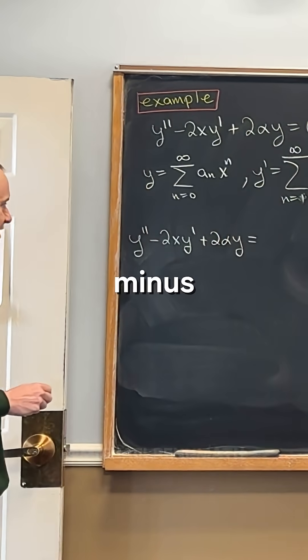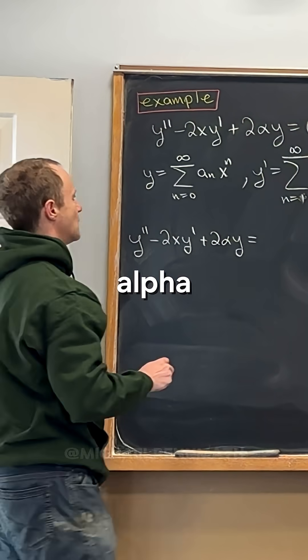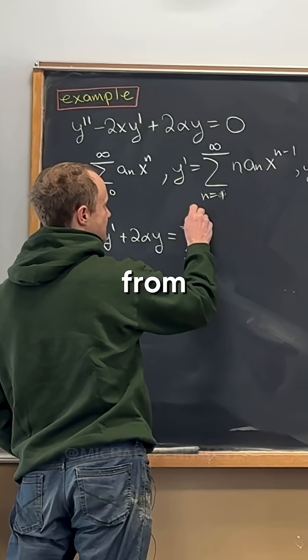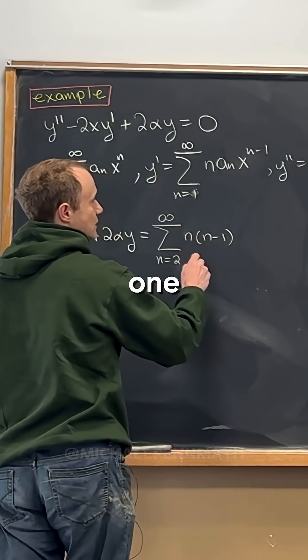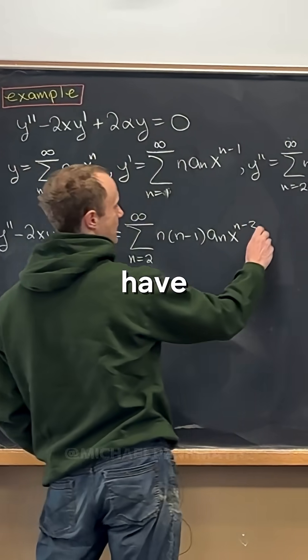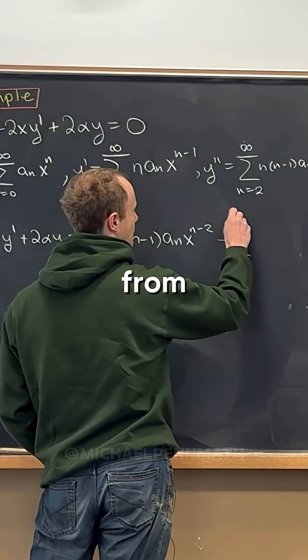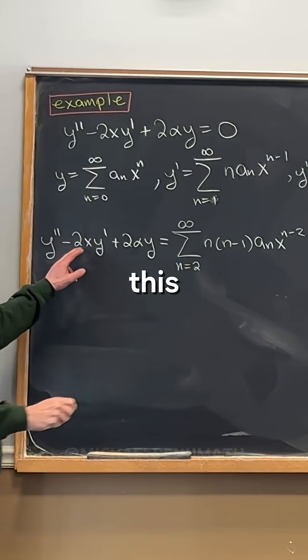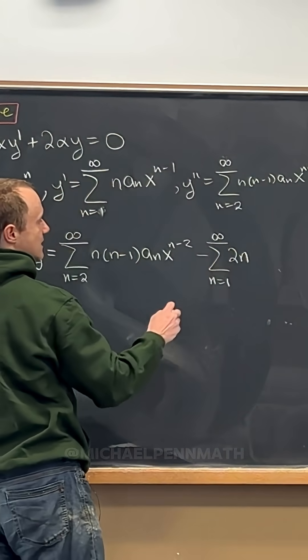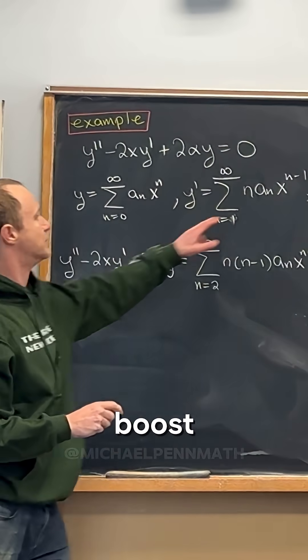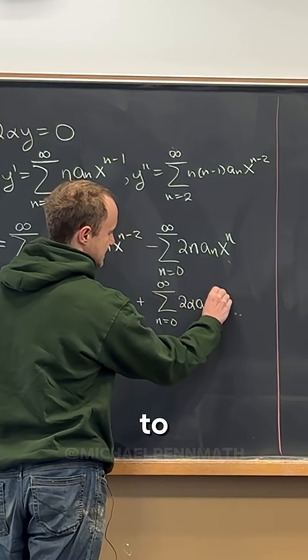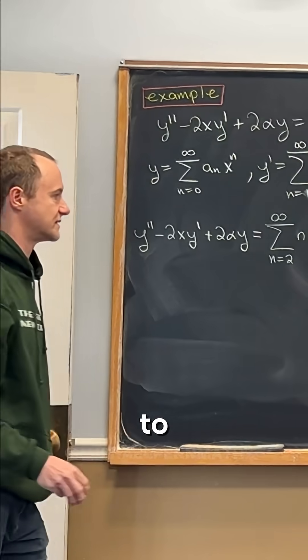So we've got y double prime minus 2xy prime plus 2 alpha y. So let's see, we'll write our y double prime down first. So that's going to be the sum as n goes from 2 to infinity of n times n minus 1 times a n x to the n minus 2. And then we'll have minus the sum as n goes from 1 to infinity. Let's multiply this 2x into this y prime. So that's going to give us a 2 here. We have 2n, a sub n, and then the x is going to boost this n minus 1 up to an n. Right? 2 alpha a n x to the n, and we want this all to be equal to 0.